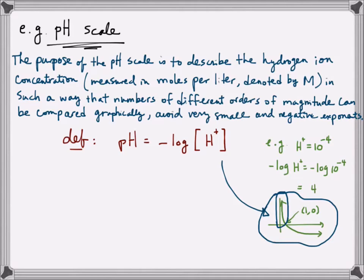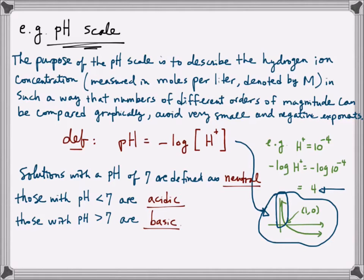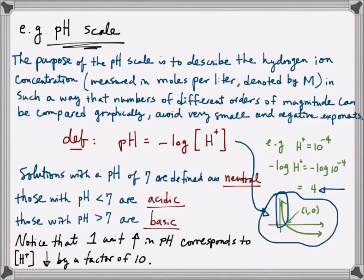For example, if the hydrogen ion concentration is 10 to the negative 4, I plug it into this formula for the pH value, I get negative log 10 to the negative 4, which after some calculation gives you the value of 4. So we're guaranteed to have a positive output value for the pH, and again, the smaller of the ion concentration is, the bigger that positive value is going to be. At this scale, solutions with the pH of 7 are defined as neutral. Those with pH value less than 7 are acidic. Those with pH value greater than 7 are basic. You also notice that one unit increase in pH value corresponds to the hydrogen ion concentration decreases by a factor of 10. This is because that for every one unit of pH, by definition equal to negative log of some value x. If we solve for x, we get that x is equal to 1 over 10, and that corresponds to a decrease by a factor of 10.